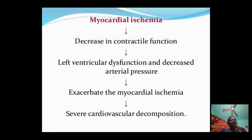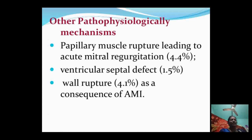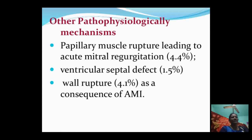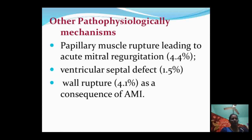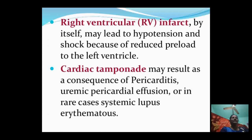Interleukin expression may itself cause hypotension. Myocardial ischemia leads to decreased contractile function, left ventricular dysfunction, decreased arterial pressure, exacerbated ischemia, and severe cardiovascular decompensation. Other pathophysiological mechanisms include papillary muscle rupture leading to acute mitral regurgitation (4.4% of cases), ventricular septal defect (1.5%), and wall rupture (4.1%), all as consequences of acute myocardial infarction.